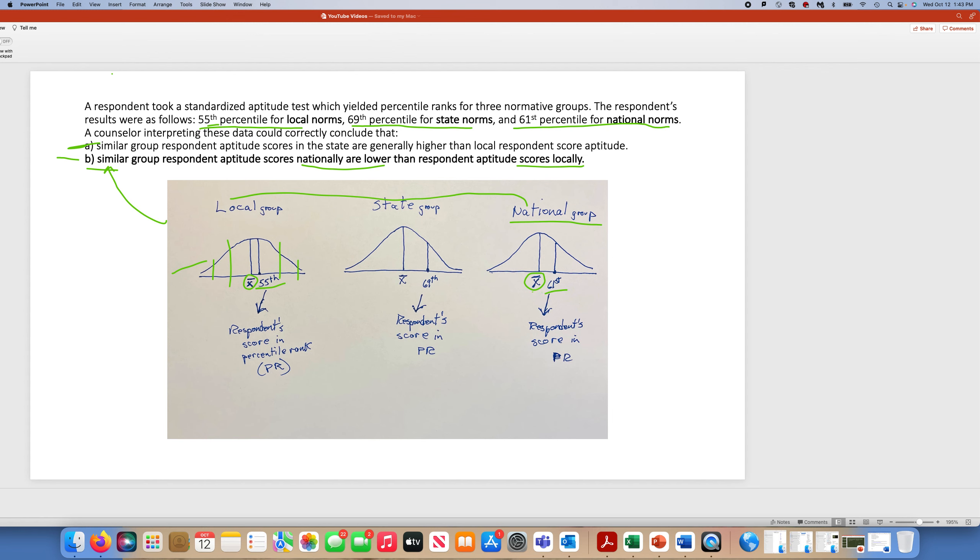Ultimately, what that's telling us is that the national group's mean was lower than the local group's mean. That's why they only scored in the 55th percentile as compared to the local group, but they scored higher in the 61st percentile when compared to the national group.